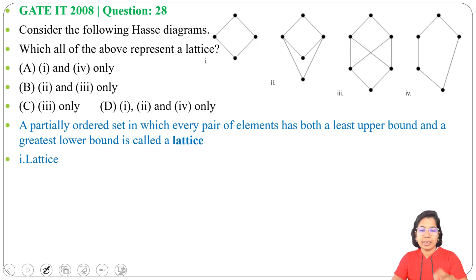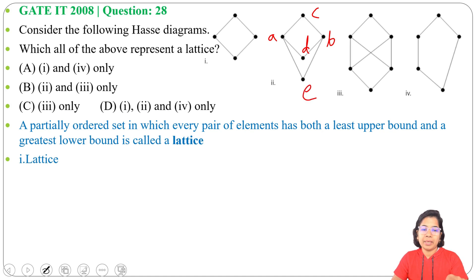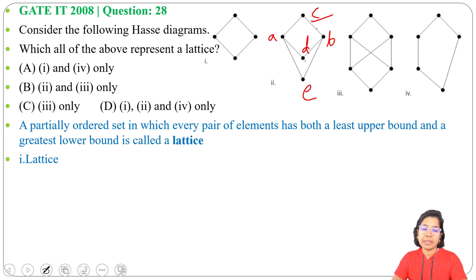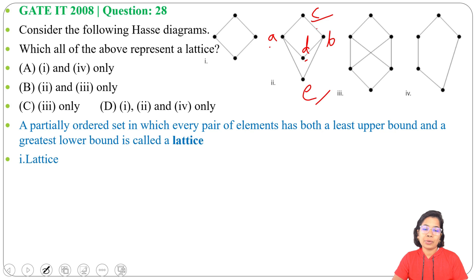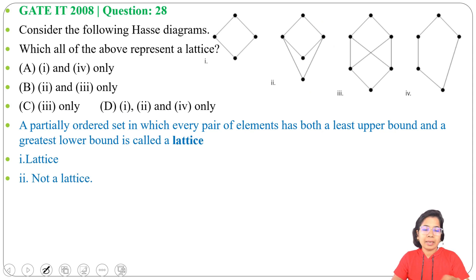Now let's check the second Hasse diagram. Label each node as a, b, c, d, e. For nodes a and b, the least upper bound is c. But what is the greatest lower bound? There are two lower bounds: d and e. Between d and e, we are unable to determine which is the greatest lower bound. Since we cannot find the GLB for the pair a and b, this second Hasse diagram is not a lattice.